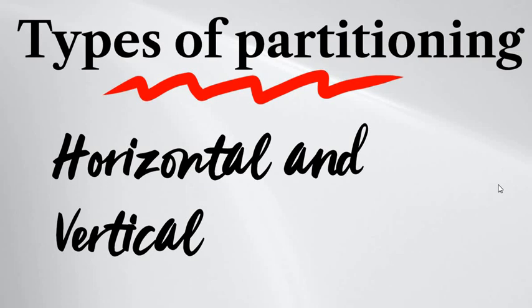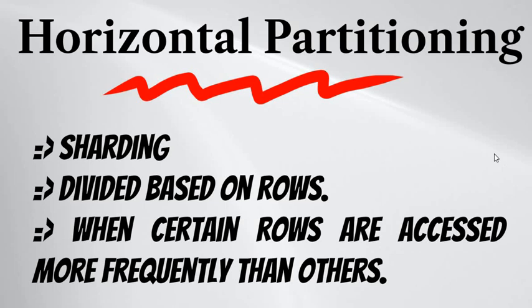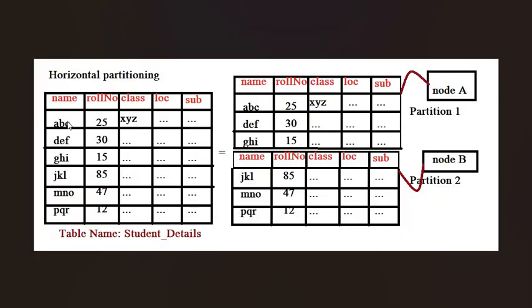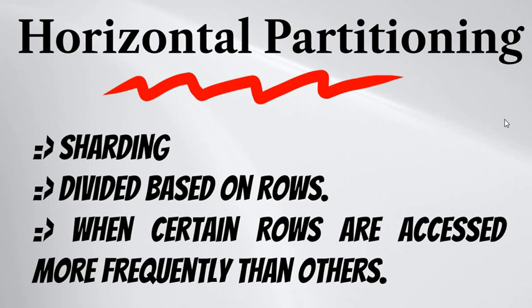The two types of partitioning we are going to talk about in this video are horizontal and vertical partitioning. In horizontal partitioning — also called sharding — data is divided based on rows. In a table, horizontal ones are the rows and vertical ones are the columns. Every node will hold a different subset of rows in horizontal partitioning. This technique is mostly used when a dataset is too large to fit on a single node's storage, or when certain rows are accessed more frequently than others.